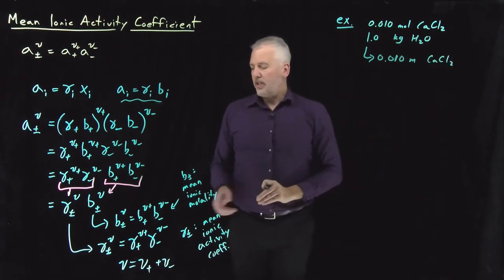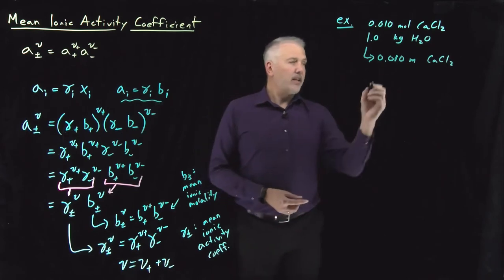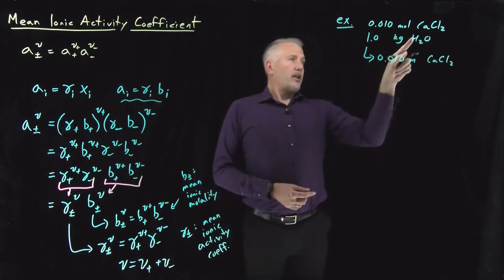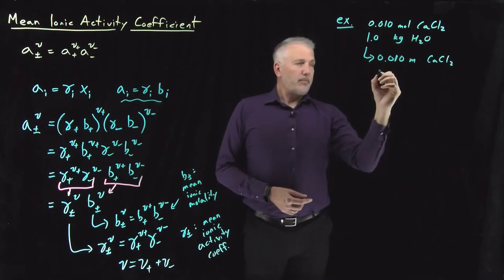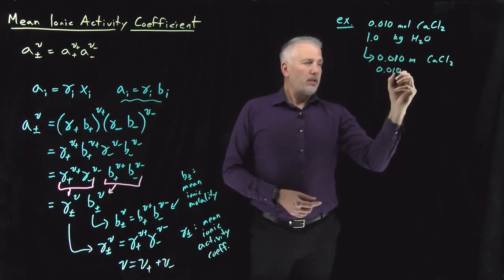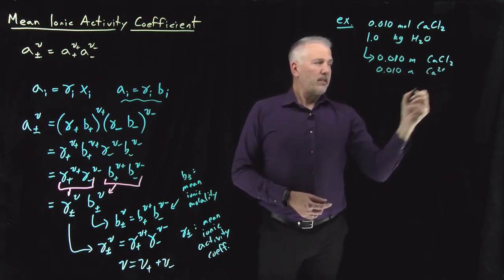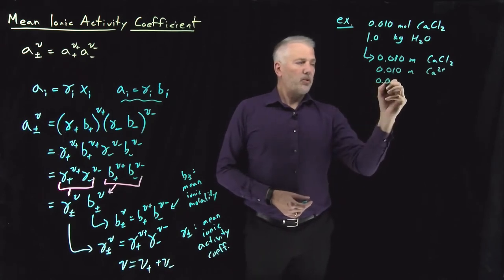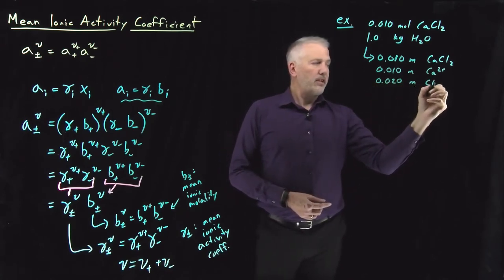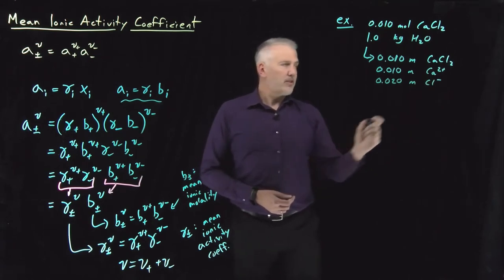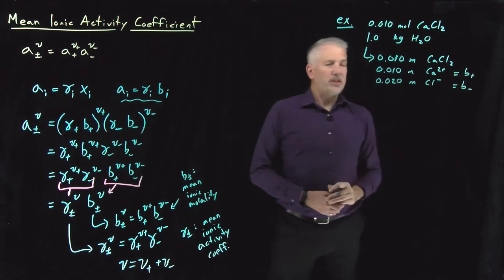Since we're going to need the molality of the cation and the molality of the anion, because it's a one-to-two salt, we have twice as much chloride as calcium. So it's 0.01 molal in calcium ions but 0.02 molal in chloride ions. This is the cation concentration and this is the anion concentration.